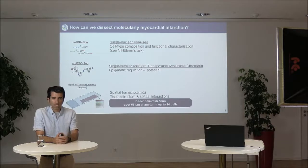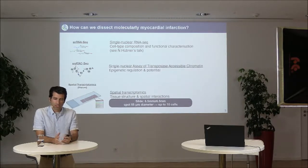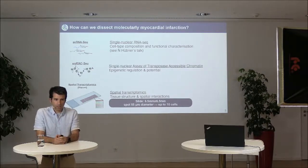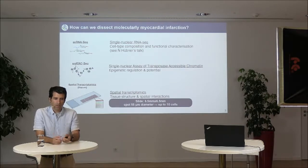Another technology that has recently become available is spatial transcriptomics, where we can look at RNA in the spatial context of the tissue. There are different technologies with pros and cons — some give single-cell resolution but only with selected markers, like the scope Norbert used yesterday. The Visium technology, which I will talk about today, gives good gene coverage but not true single-cell resolution — you get small spots with around ten different cells, which has interesting challenges but is also quite powerful.